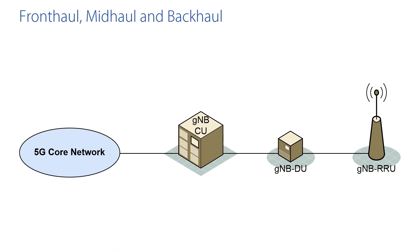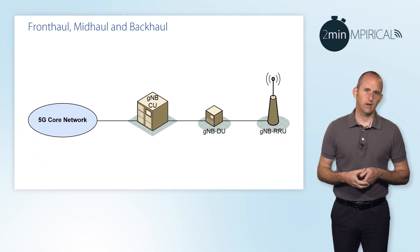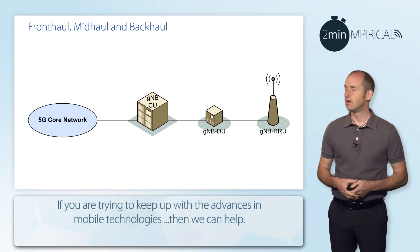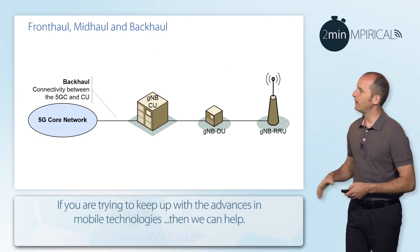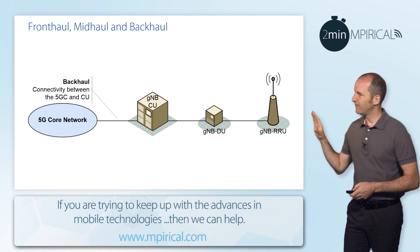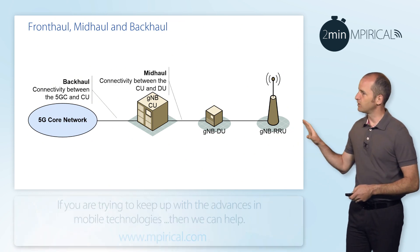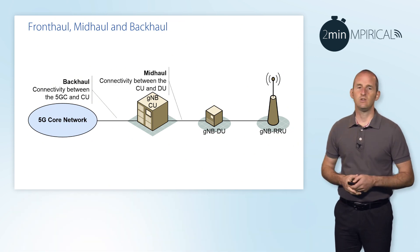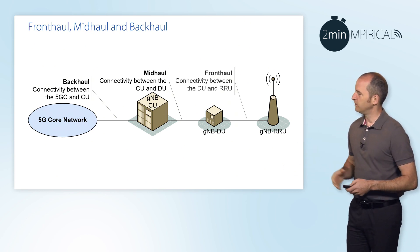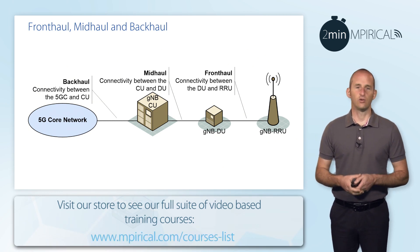The fronthaul, midhaul, and backhaul terminology is used to describe the transport network architecture that connects up these different elements. Between the core network itself and the centralized unit, that's where backhaul is positioned. Between the centralized unit and the distributed unit is where we have the term midhaul. And then finally, between the distributed unit and the remote radio unit, we have fronthaul.